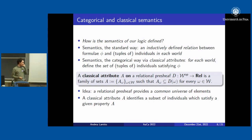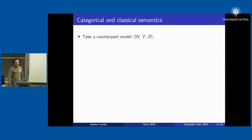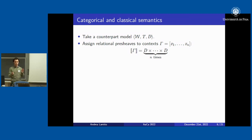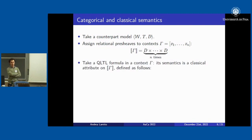Formally, a classical attribute A on a relational presheaf D is a family of sets — for each world omega in W — such that A(omega) is a subset of what the presheaf assigns to that world. The relational presheaf gives a common universe of elements, and a classical attribute is a given property: an individual in a world belongs to the classical attribute A when it satisfies that property.